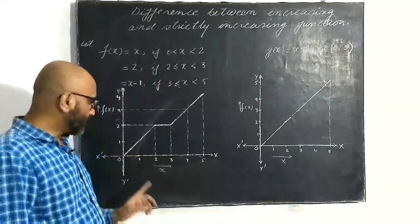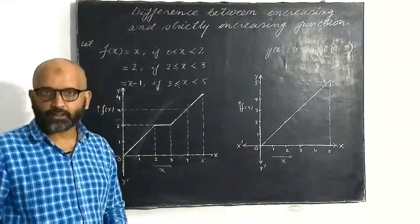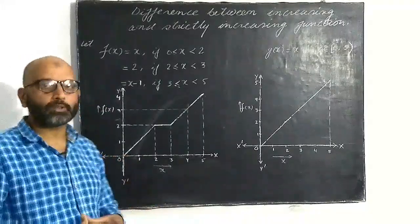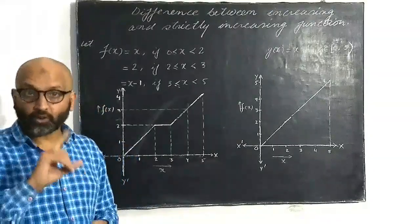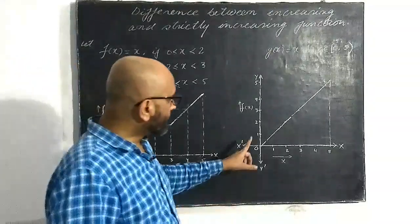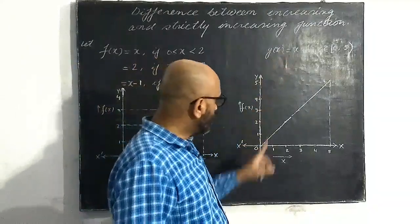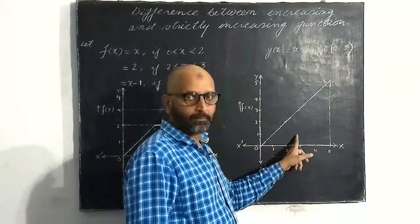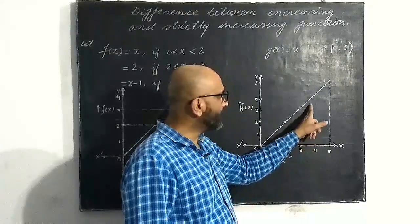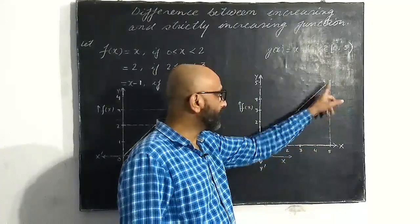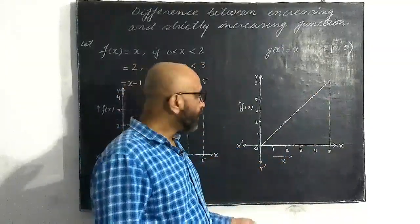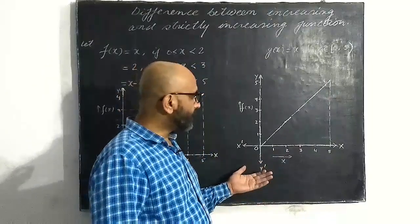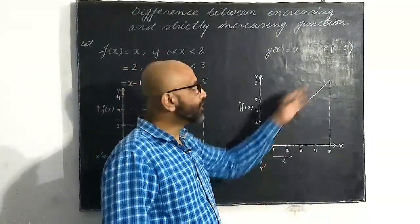Throughout 0 to 5, f(x) is not increasing at every point due to the constant part, but it is not decreasing at any point either. So in this case, we say this function is an increasing function but not strictly increasing. Whereas for g(x), from 0 to 5 the function is continuously increasing — it is increasing at every point throughout the interval and is never constant. So this type of function is called strictly increasing.